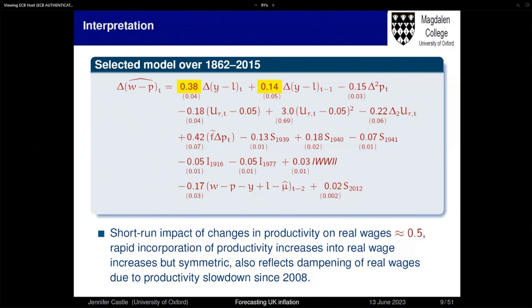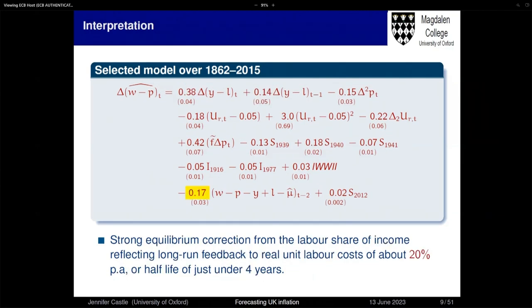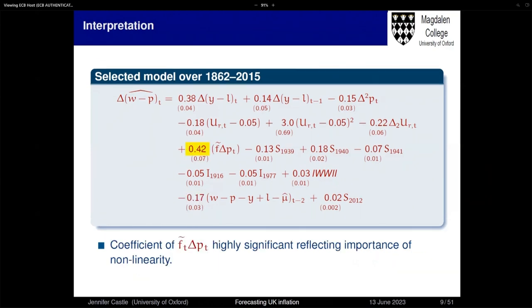The first thing going on is a short-run impact of changes in productivity on real wages of roughly about 0.5 — a fairly rapid incorporation of productivity increases into real wages. This is symmetric, so it also reflects the dampening of real wages due to the productivity slowdown in 2008. As well as productivity growth, we have a strong equilibrium correction mechanism. We saw in the data that real wages and productivity trend very closely together, with a long-run feedback to real unit labour costs of about 20%, giving a half-life of just under four years.